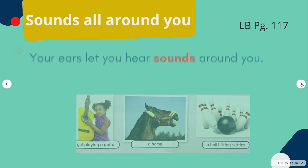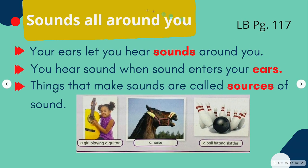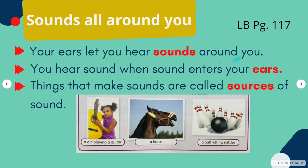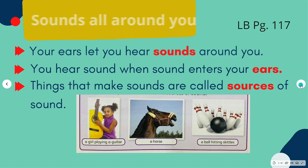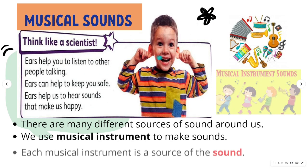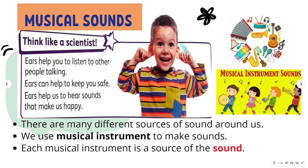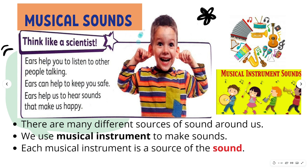Your ears let you hear sounds around you. You hear when a sound enters your ears. Things that make sounds are called sources of sound, such as a girl playing a guitar, a horse galloping, or a ball hitting skittles. Ears help you listen to other people talking — just like now, you can hear your teacher explaining — and it can help to keep you safe.